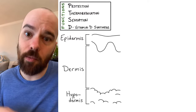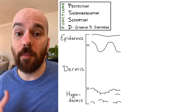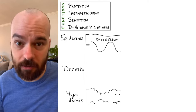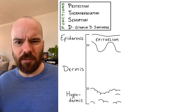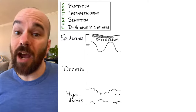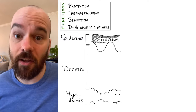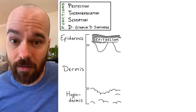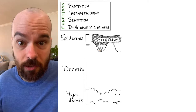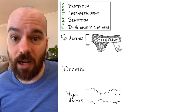If we went deeper than the hypodermis, we'd come to muscle, bone, and then the internal organs. The epidermis, the most superficial layer, is made of stratified epithelial tissue. Epithelial tissue is tissue where cells are packed really tightly together, and stratified means there's more than one layer — in fact, there are lots of layers of cells in the epidermis. Having so many layers gets back to our first function: protection. Having lots of layers means a thicker layer of protection from the outside world.